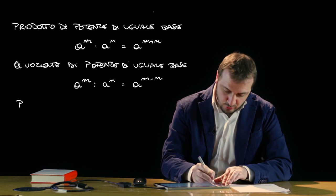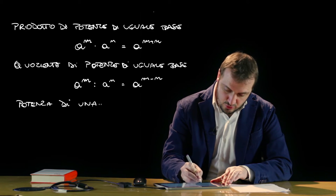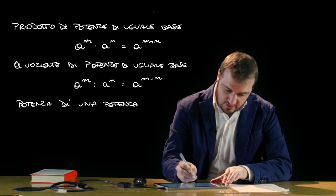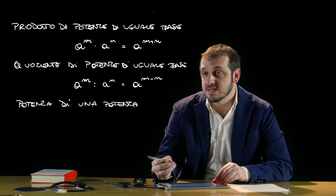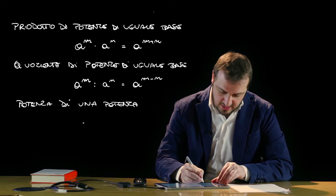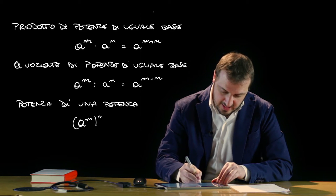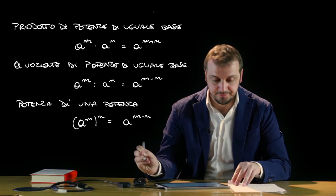Ancora la potenza di potenza, ossia la potenza di una ulteriore potenza: questa come risultato è una potenza che ha per base la stessa base e per esponente il prodotto degli esponenti, per cui se abbiamo a alla m alla n, questo sarà pari ad a alla m per n.